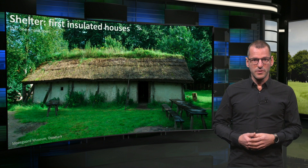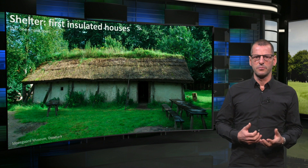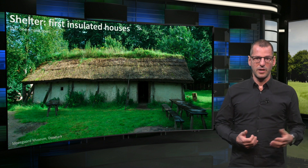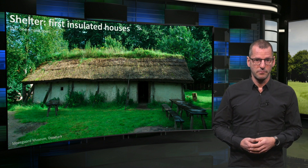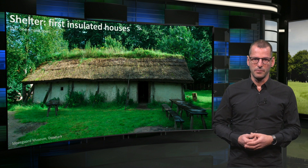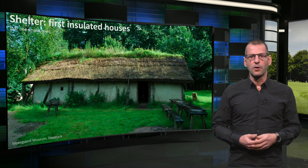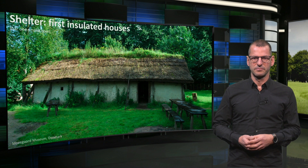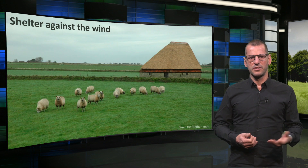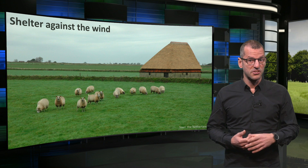In somewhat colder climates, without caves, humans started building homes with massive, heavy materials for stability and thatched roofs to keep out the cold and rain. Here you see an ancient house in Denmark. It had small windows, one door, and a smoke hole in the roof. In windy areas, buildings often responded to predominant wind directions, as you can see here.